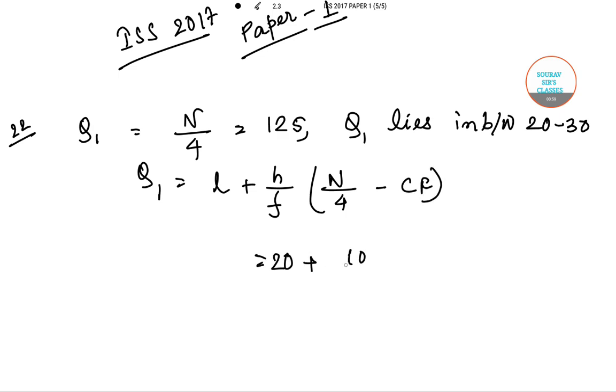That equals 20 plus 10/200 multiplied by 125 minus 100, equals 20 plus 25/20, that gives us 20 plus 1.25 equals 21.25.